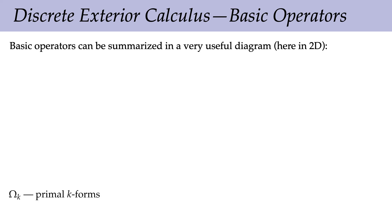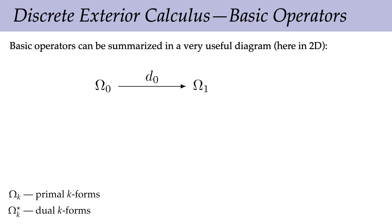Once you've built these basic matrices — signed incidence matrices for the exterior derivative and diagonal Hodge star matrices with volume ratios — you can compose them to get more interesting operations. The gradient is just D₀, the curl is ⋆₂ D₁, the divergence is ⋆₀⁻¹ D₀ᵀ ⋆₁, and you build up lots of complexity from these basic operators.